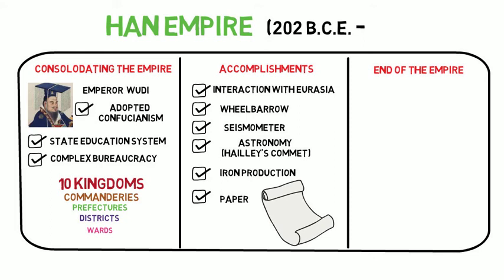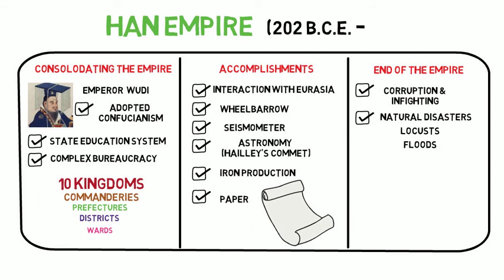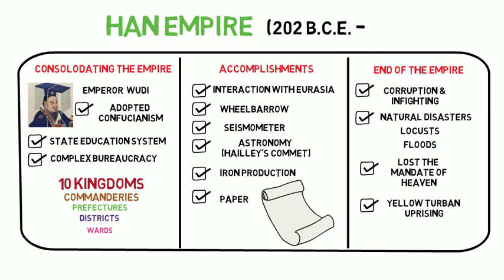Like other empires, the Han Dynasty fell. Due to corruption and infighting within the government and a series of natural disasters including locust swarms and devastating floods, many people throughout the empire began to feel that the Han rulers had lost the mandate of heaven. To add to Han troubles, Daoists demanding equal land distribution started an uprising known as the Yellow Turban Uprising from 184 to 205. By the year 220, the Han Dynasty was no more.